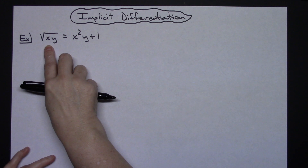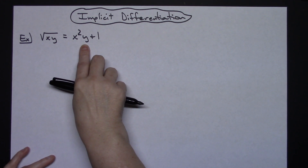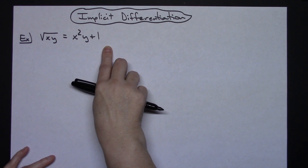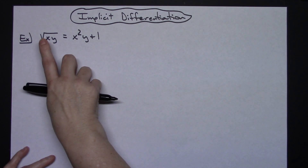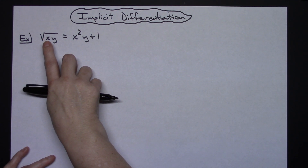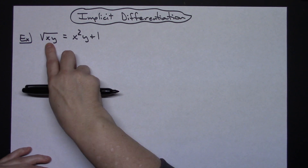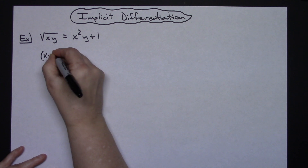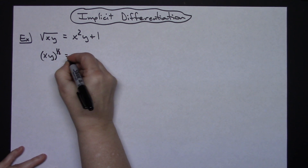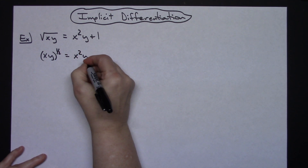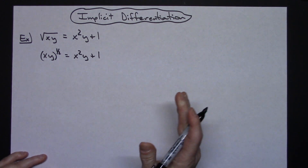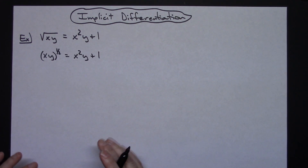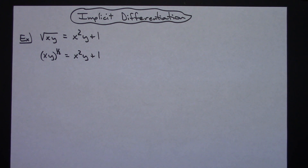Let's suppose we've got the square root of x times y is equal to x squared times y plus 1. I need to implicitly differentiate this. First of all, I'm going to choose to rewrite this so that I've got x y raised to the 1 half power. I'm not going to do anything to the right hand side — notice I haven't done any calculus yet. I am just manipulating this so it's going to be easier to see how we have to take this derivative.